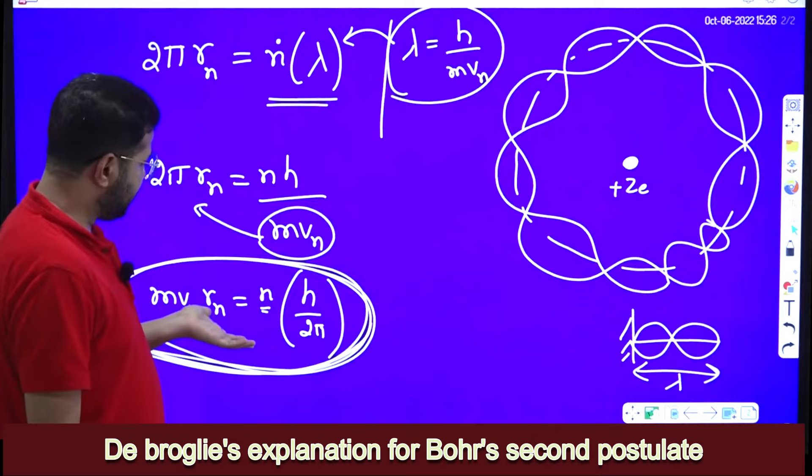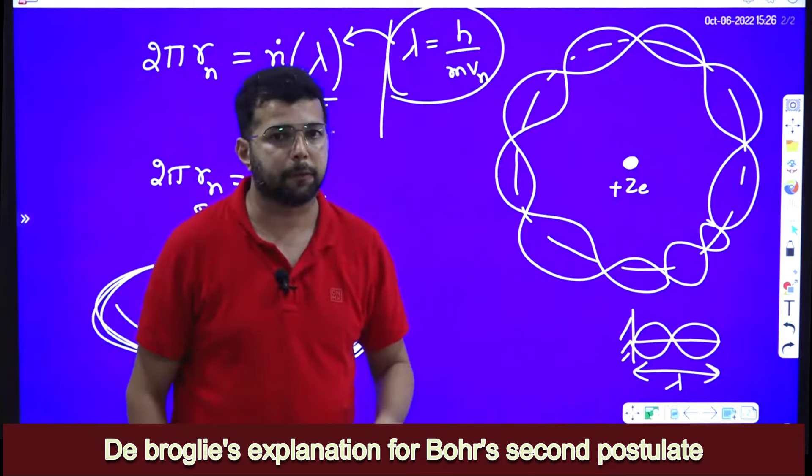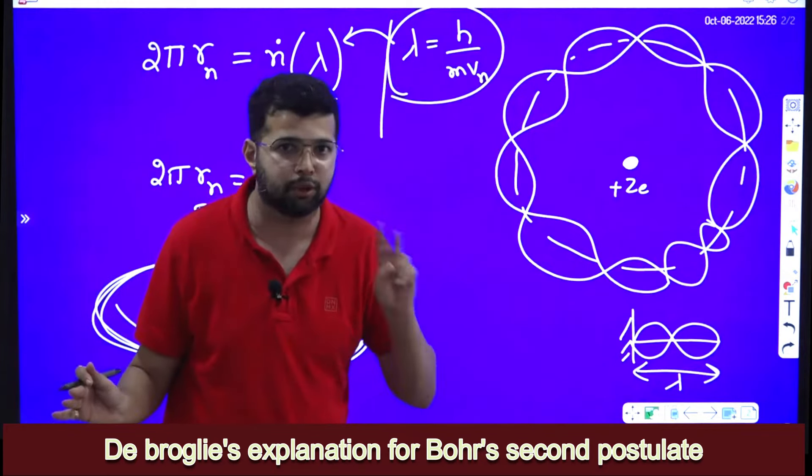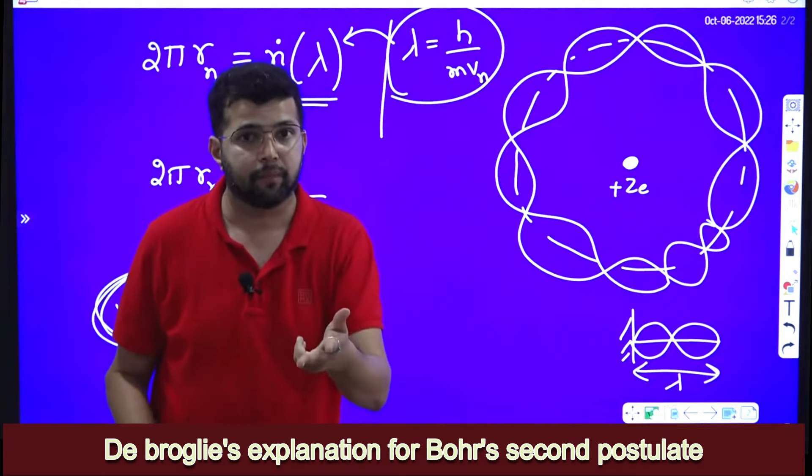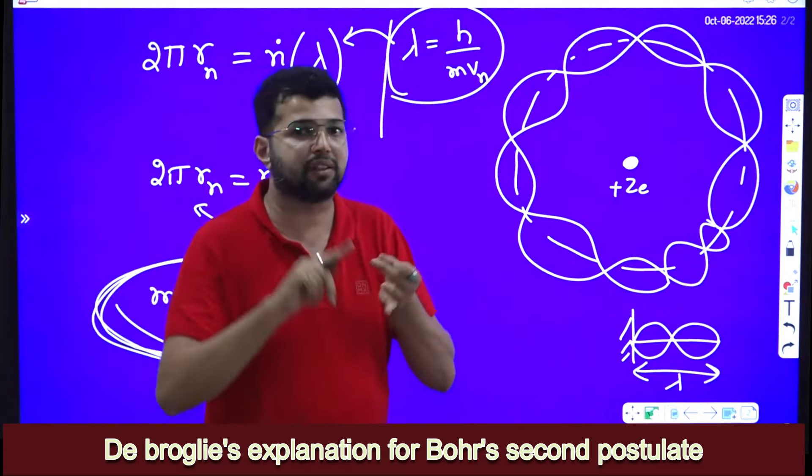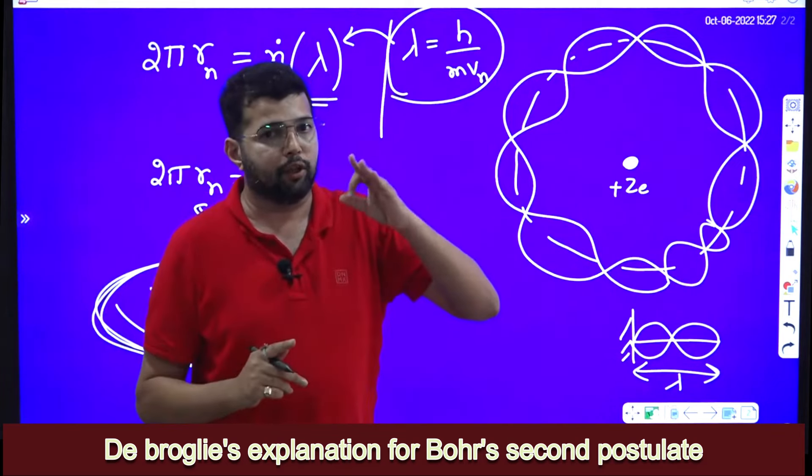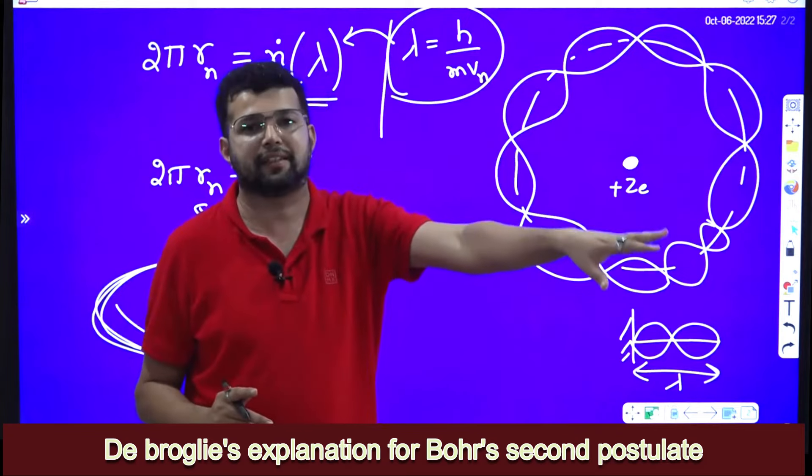See, the importance of this explanation is, if you think of the electron as a particle, you cannot give explanation to Bohr's second postulate. But we know that Bohr's second postulate is correct because using Bohr's theory everything is explained. You can calculate radius, you can calculate velocity and energies, and you can calculate the spectral lines, wavelengths of spectral lines, and everything is correct.